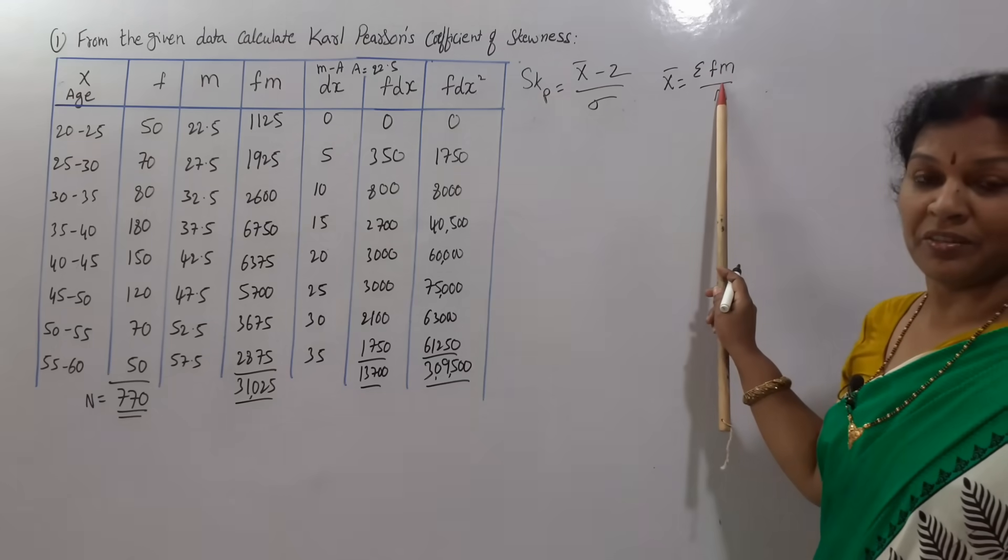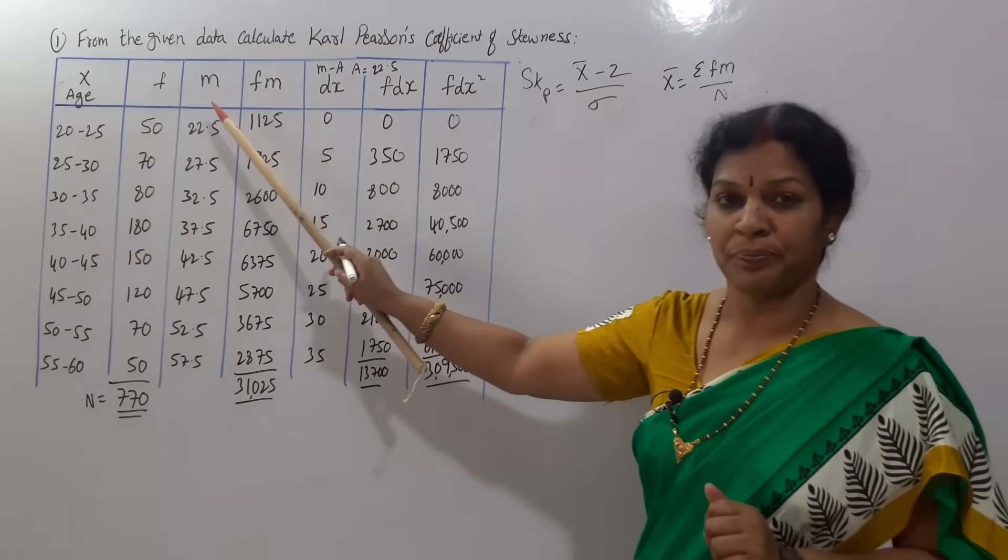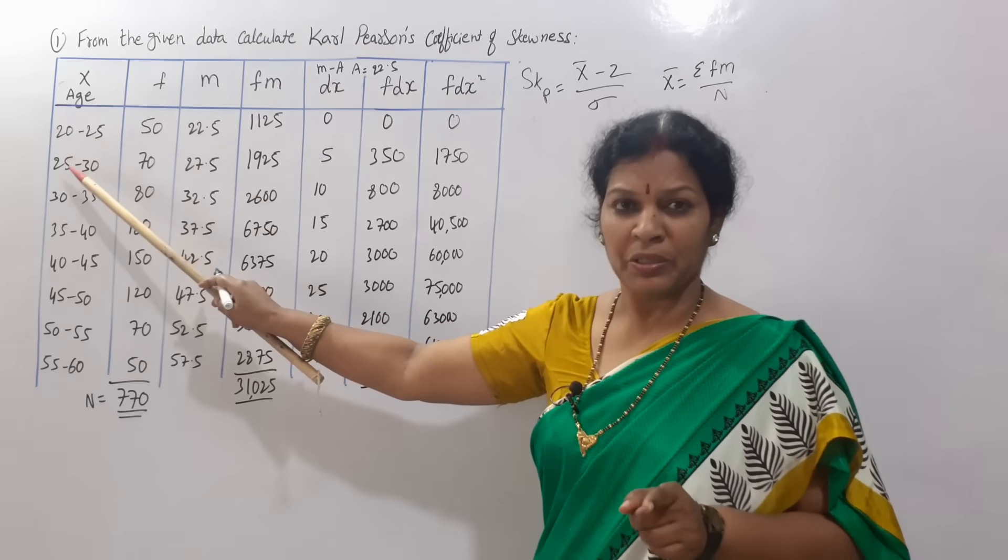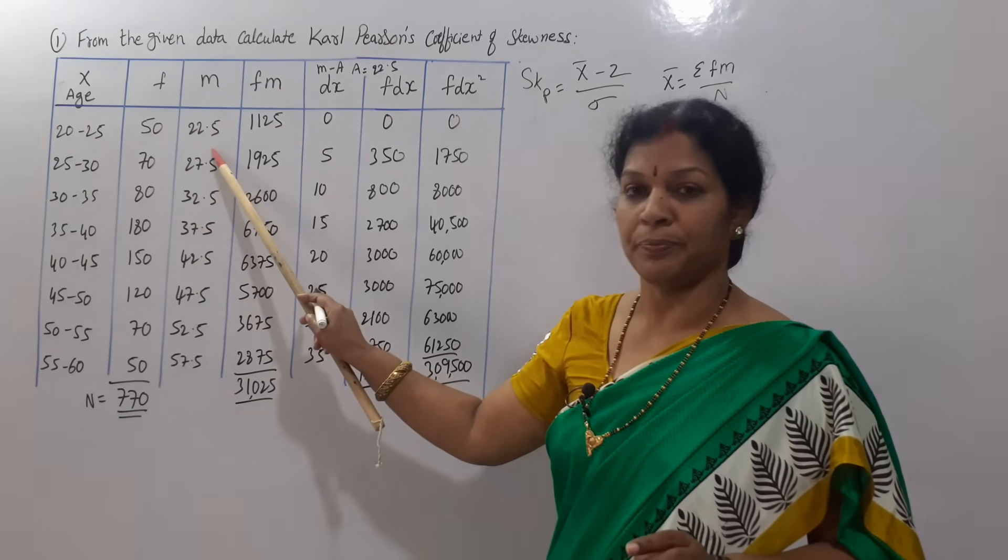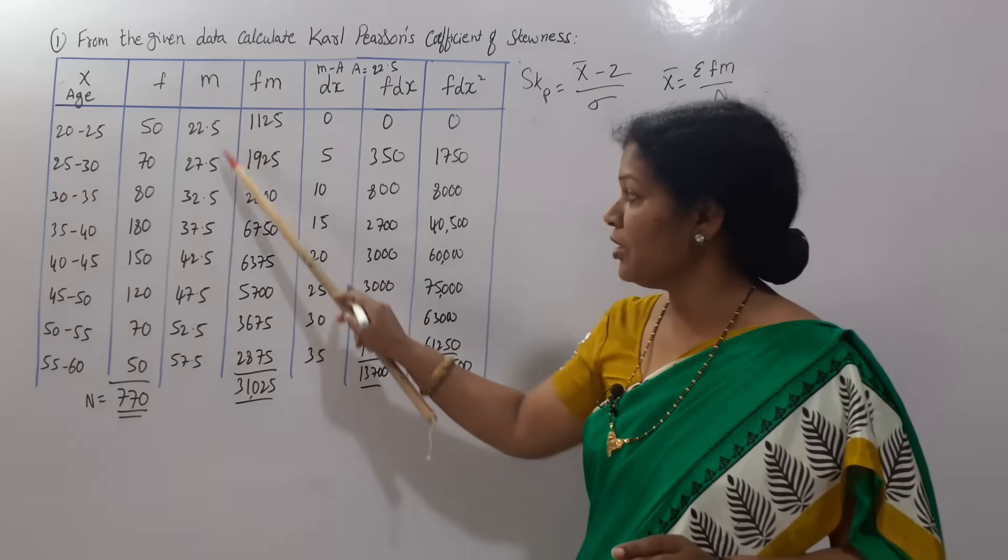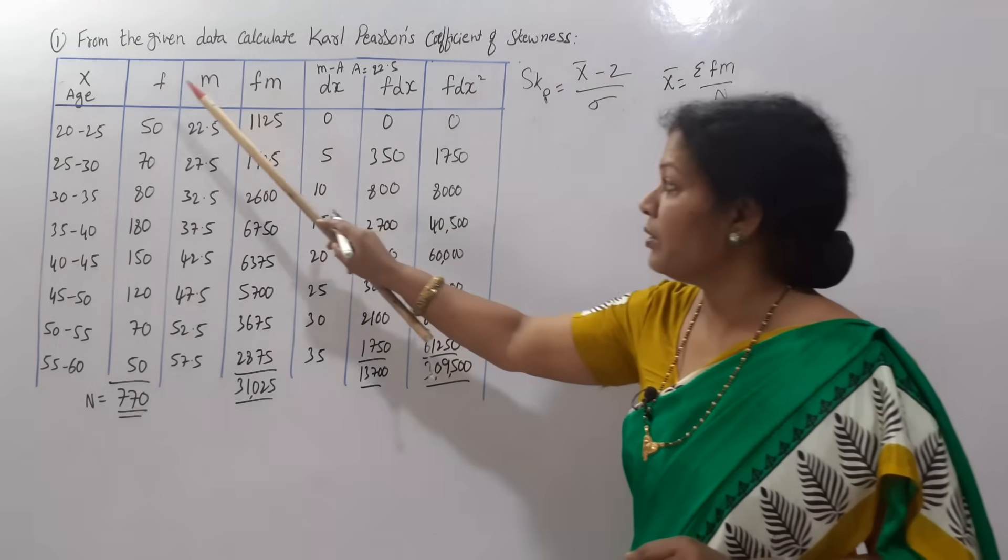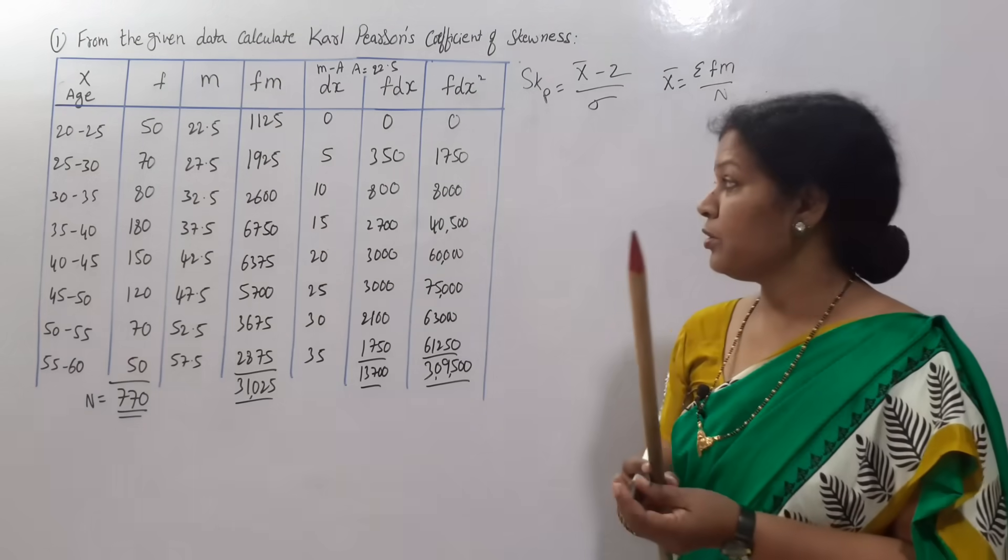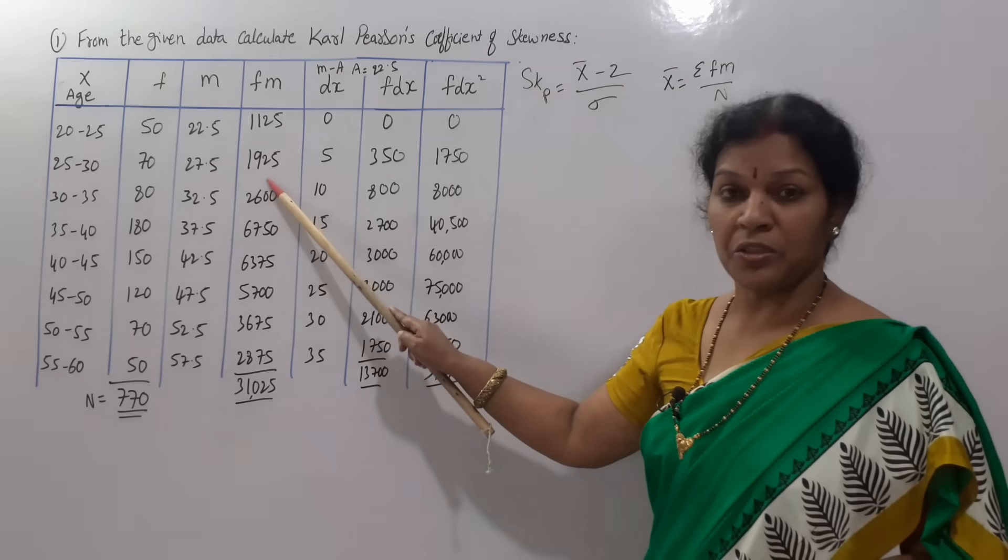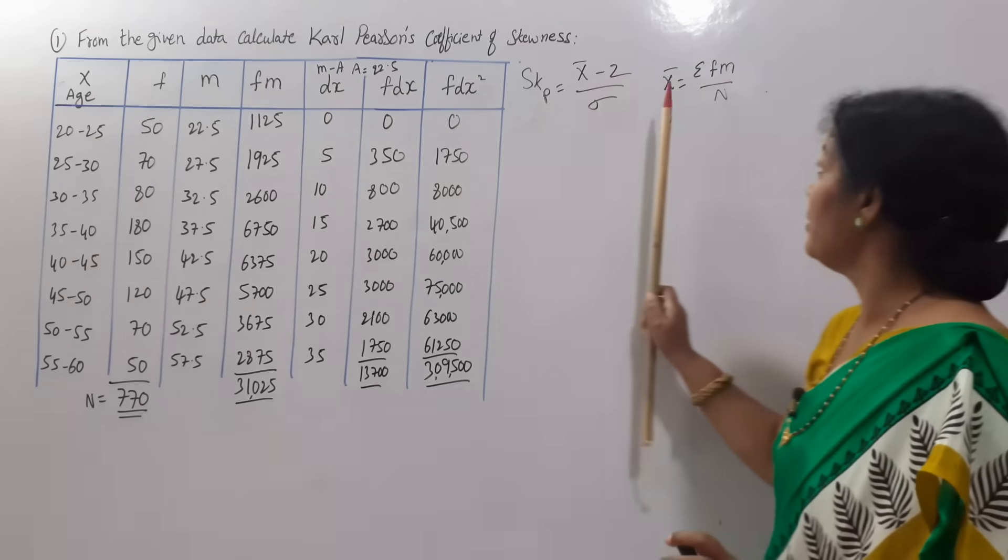As per the given formula, to get f m, first we need mid value m. M I have calculated. You know how to calculate m: 20 plus 25 by 2 equals 22.5. In the same way, 25 plus 30 by 2, 55 by 2, that is 27.5. Once you get m value, we need f m, frequency into mid value.